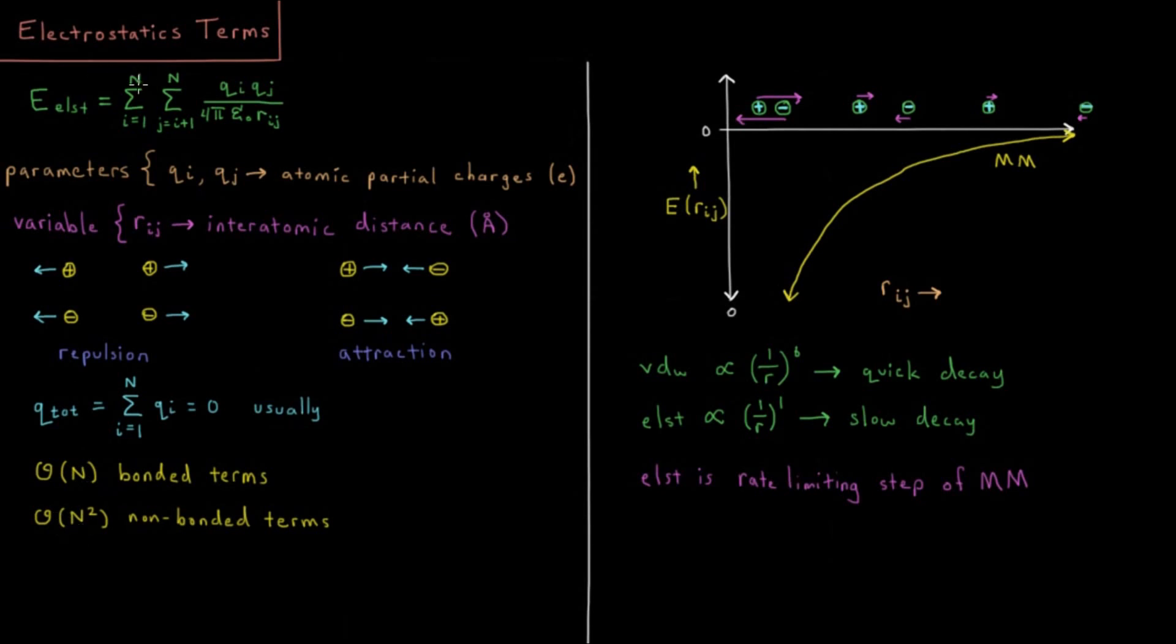The number of pairs of atoms scales quadratically with the size of our system. So the number of pairs of atoms is n times n minus 1 over 2, which is quadratically scaling. So in the limit of a very large system, almost all of our pairs of atoms are interacting through these non-bonded terms.